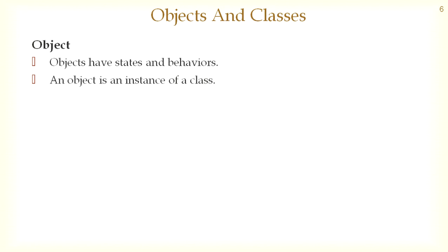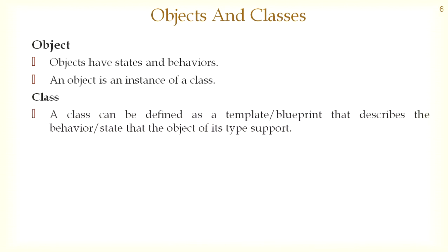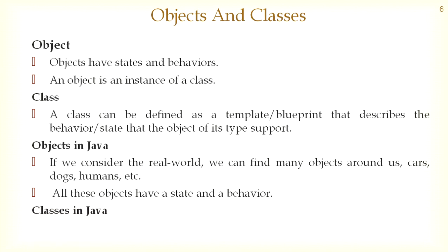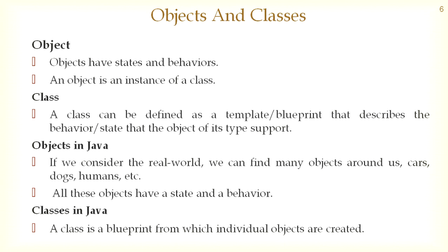Objects have states and behaviors. An object is an instance of a class. A class can be defined as a template or blueprint that describes the behavior and state that objects of its type support. In Java, if we consider the real world, we can find many objects around us such as cars, dogs, humans, mobile phones, watches, books, and water bottles. A class is a blueprint from which individual objects are created.